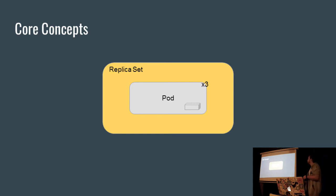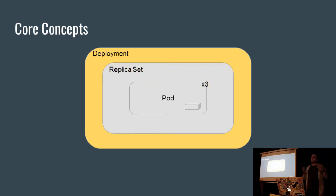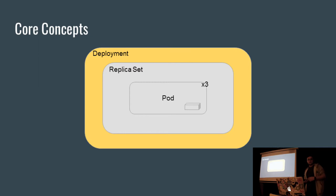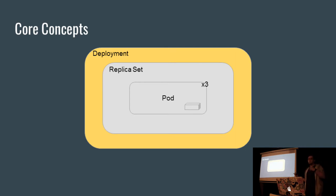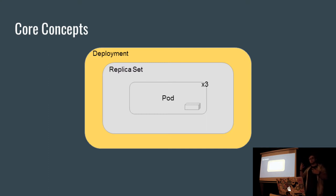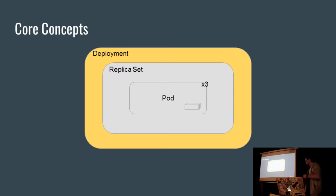A replica set will just say how many of a pod you want to have — so three here. Around a replica set, we can have a deployment. All a deployment really does is it builds on top of the replica set, so you've still got how many of a pod you want, but it allows you to do rolling deployments. When you want to ship a new version of your application, you update the deployment, and it will handle bringing up the new pods with your new app version and then take down the old ones without any downtime.